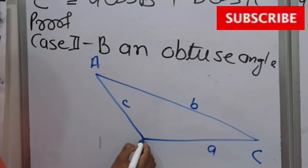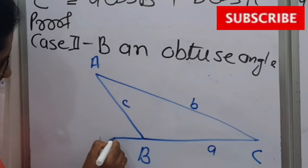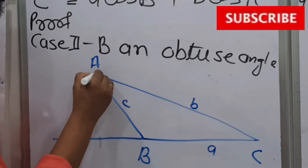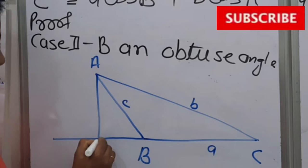Now we will produce this BC, means extend this BC in this way. Again we will draw an altitude from A on BC which will meet at D. Now this is 90 degrees.